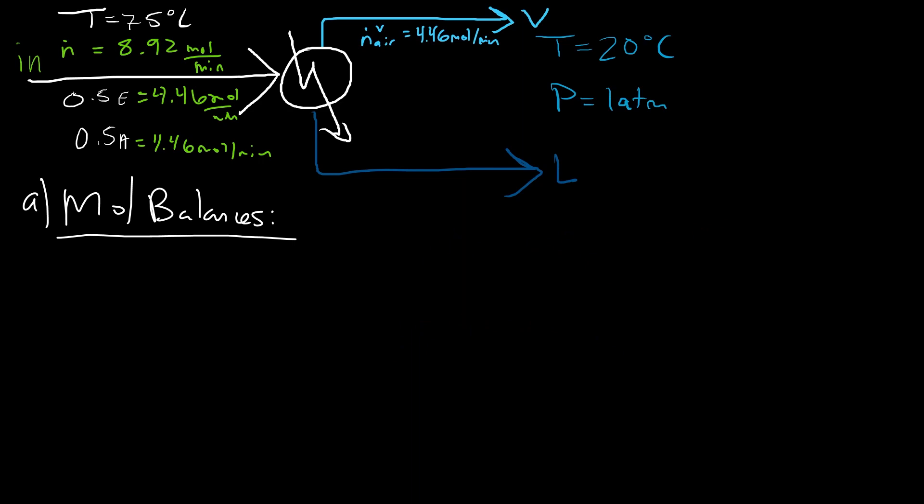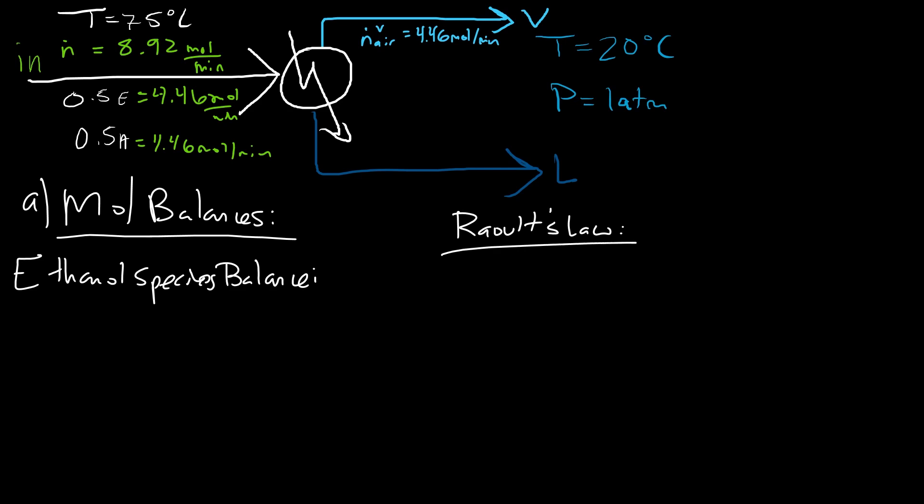Now for the ethanol species balance. Before we proceed, we note that we currently have one equation with two unknowns: the molar flow rate of ethanol vapor and the molar flow rate of ethanol liquid. We need an additional assumption: that the two outlet streams — vapor and liquid — are in thermodynamic equilibrium, that the vapor behaves as an ideal gas, and that the liquid is an ideal solution.